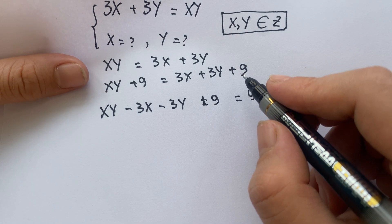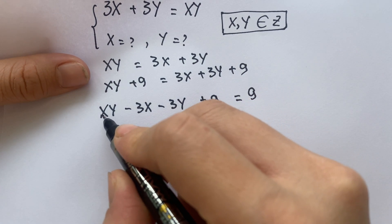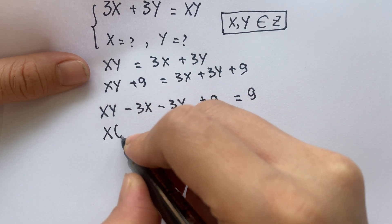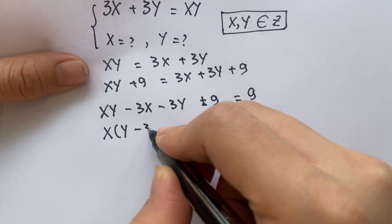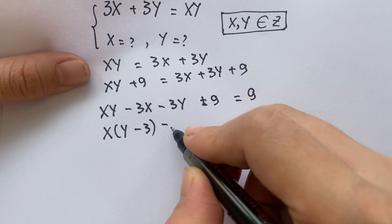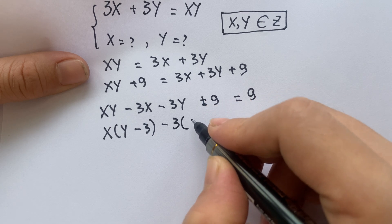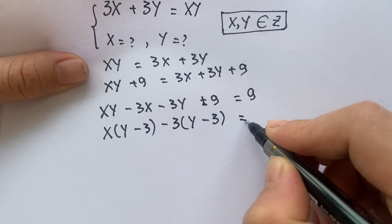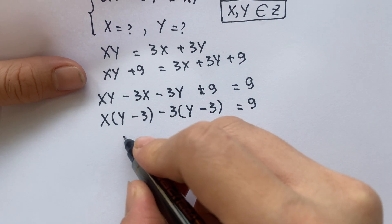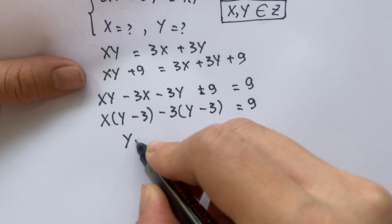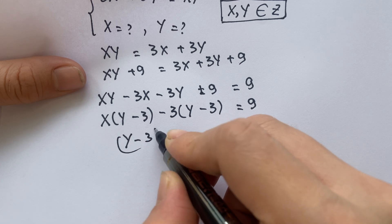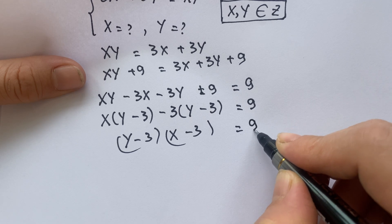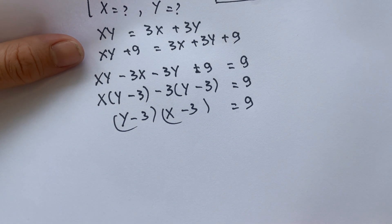So we have xy minus 3x minus 3y plus 9 equals 9. You can see x here is a common factor, so you can take x out: x times (y minus 3), then minus 3 out, giving minus 3 times (y minus 3). So we have (x minus 3)(y minus 3) equals 9.